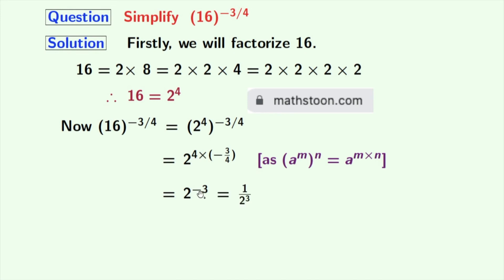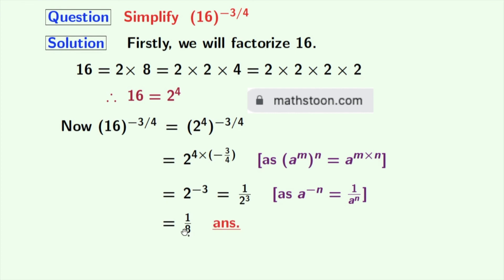Now this is equal to 1 by 2 power 3, as we know that a power minus n is equal to 1 by a power n. Here a is 2 and n is 3. After simplification of this we get 1 by 8, and this is our final answer.